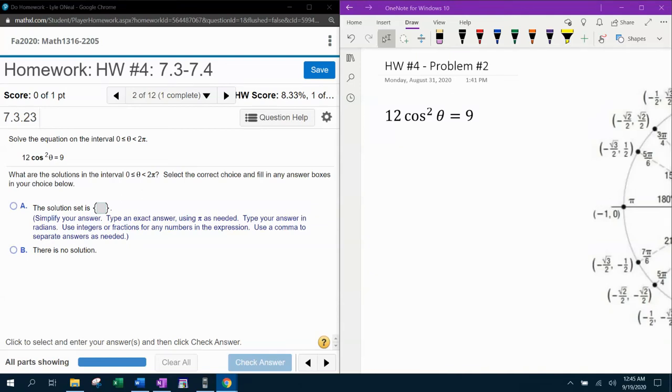All right, here we go. Question number two from our 1316 homework number four in MyLabMath. They want us to solve the trigonometric equation on the interval from zero to two pi.